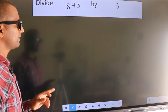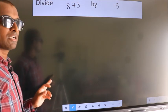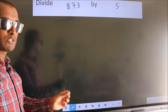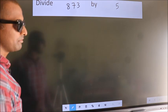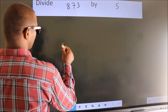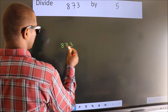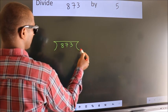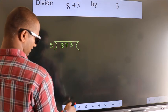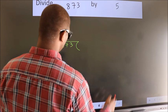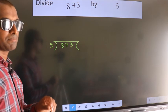Divide 873 by 5. To do this division, we should frame it in this way: 873 here, 5 here. This is your step 1.